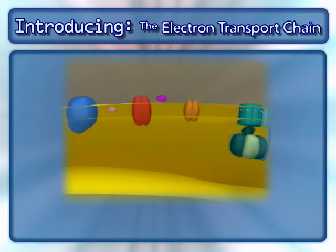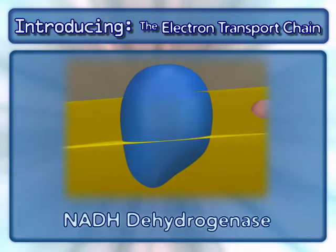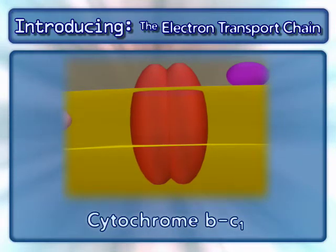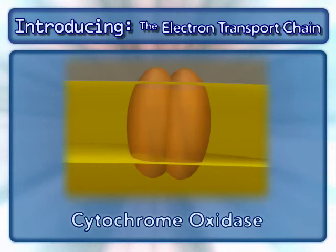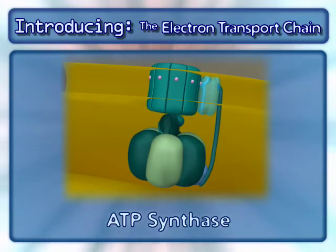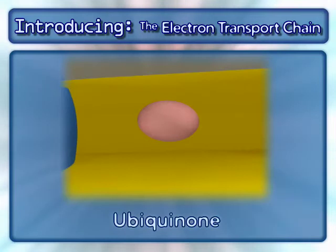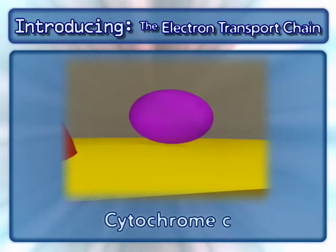The following complexes are found in the electron transport chain: NADH dehydrogenase, cytochrome BC1, cytochrome oxidase, and the complex that makes ATP, ATP synthase. In addition to these complexes, two mobile carriers are also involved: ubiquinone and cytochrome C.